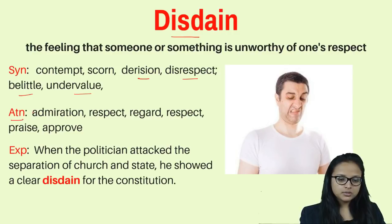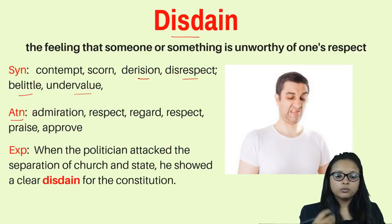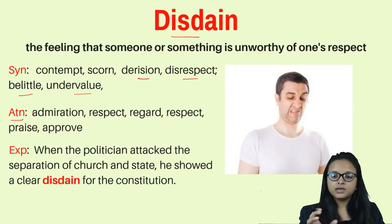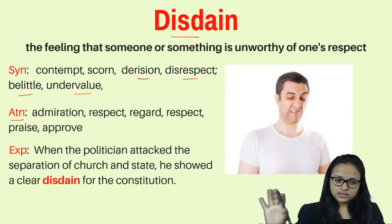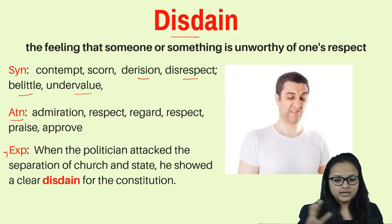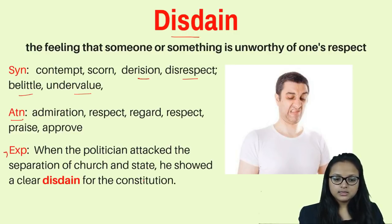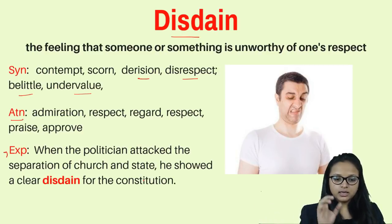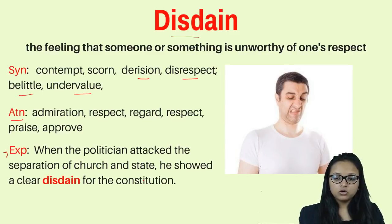The antonyms of disdain are: admiration, respect, praise, and approval — when you like someone, you admire and approve of them. For example, when the politician attacked the separation of church and state, he showed a clear disdain for the constitution. It means he did not like the idea of separating church and state, thinking it was not worthy of respect or approval.